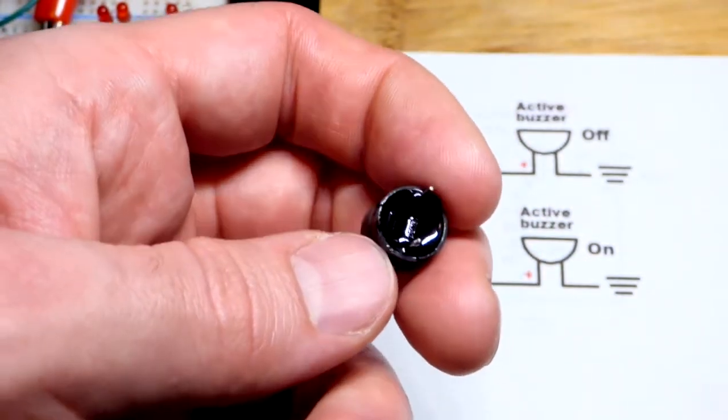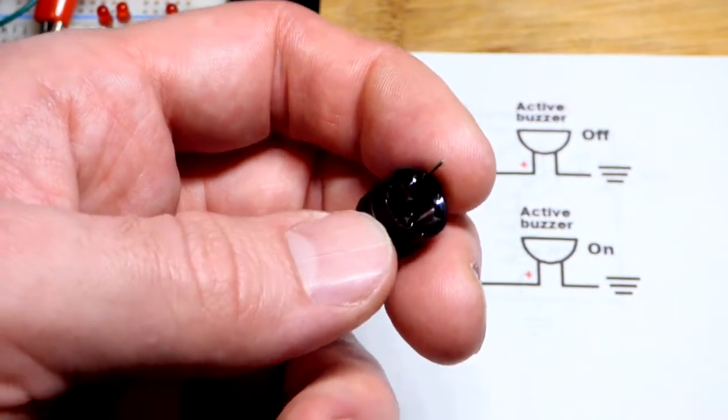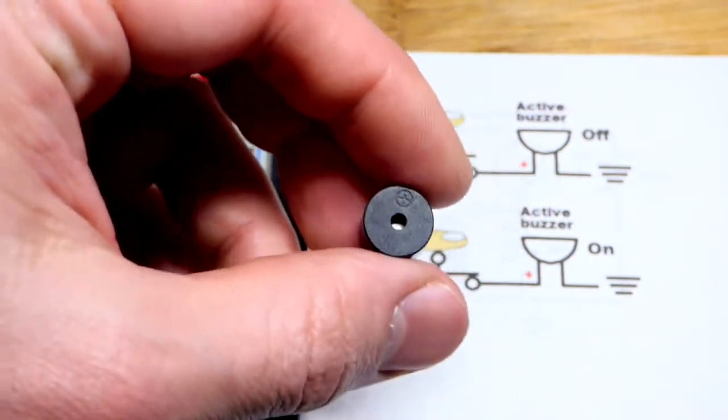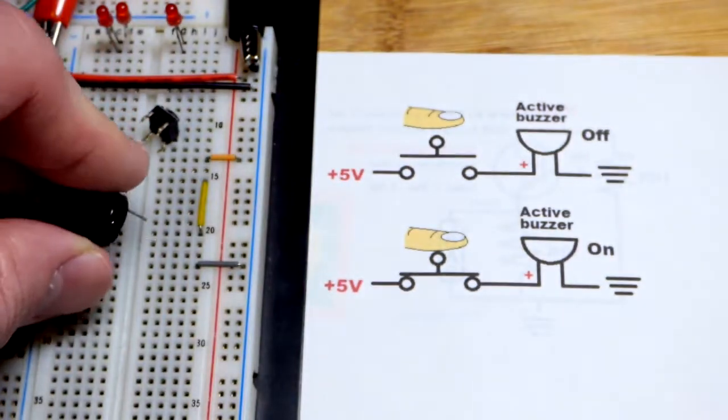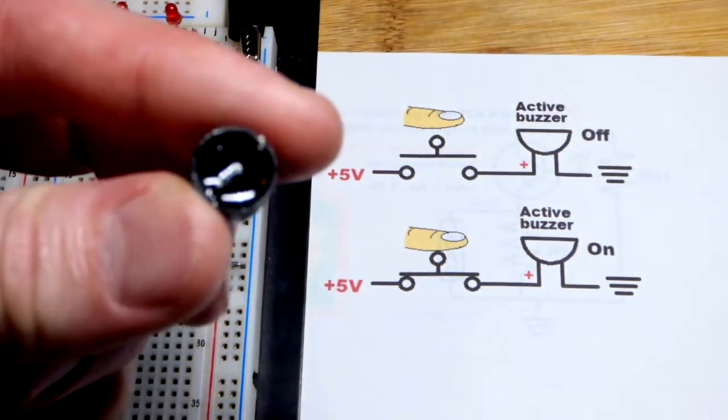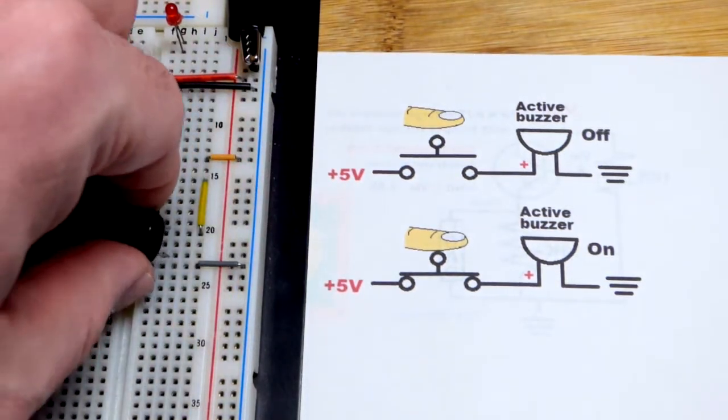You can see it's filled in on the back. Not all buzzers that look like this are active buzzers. If you see circuitry on the back there, it's a good chance that it's a passive buzzer.